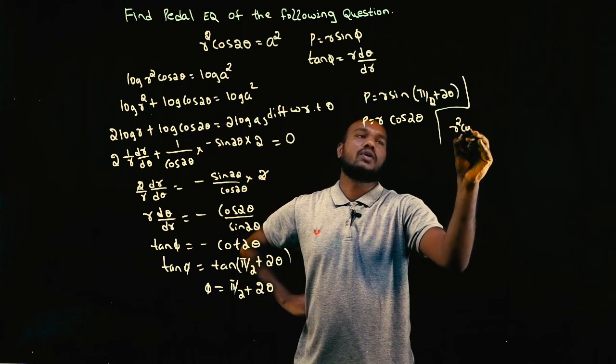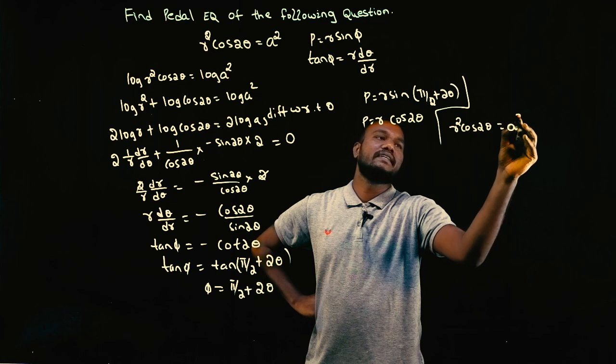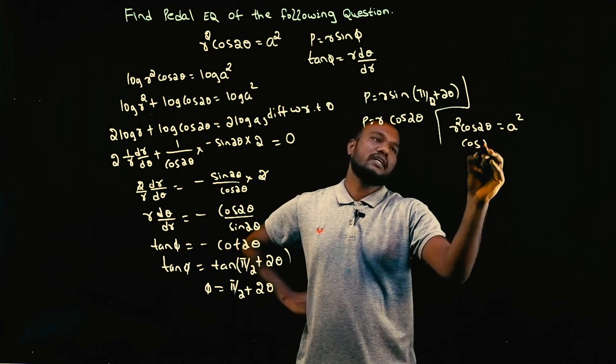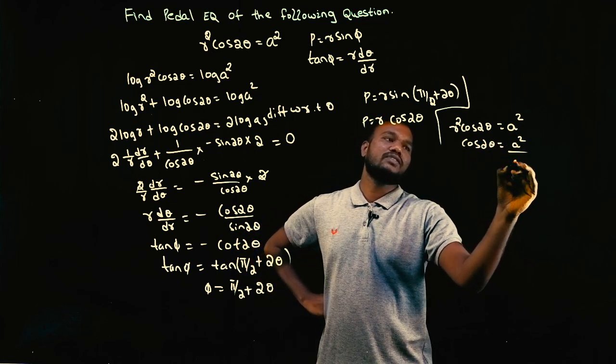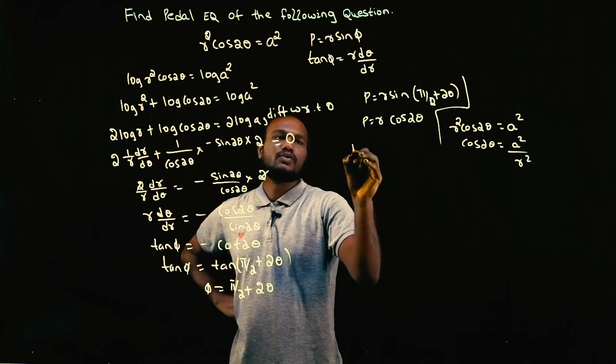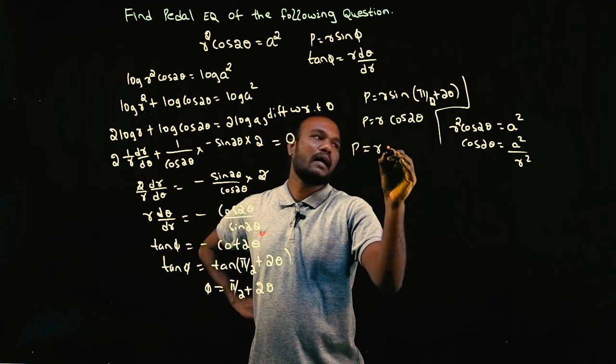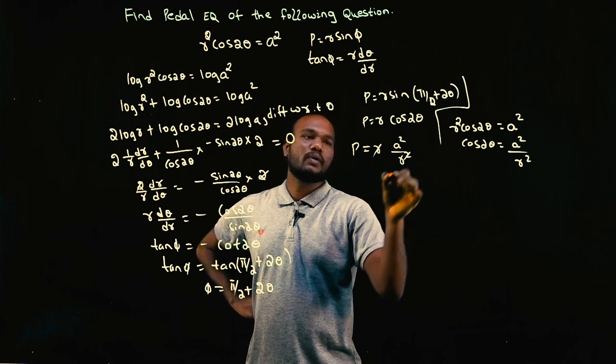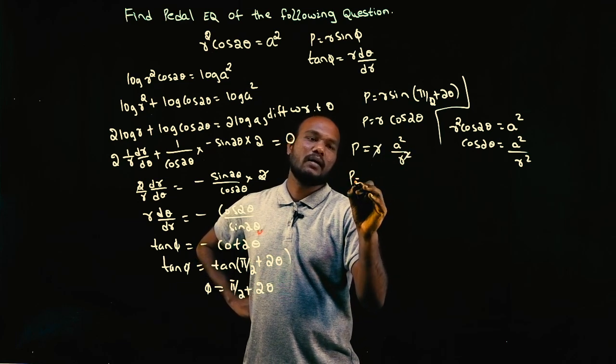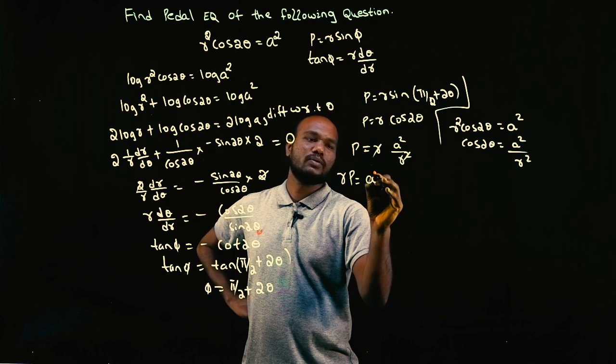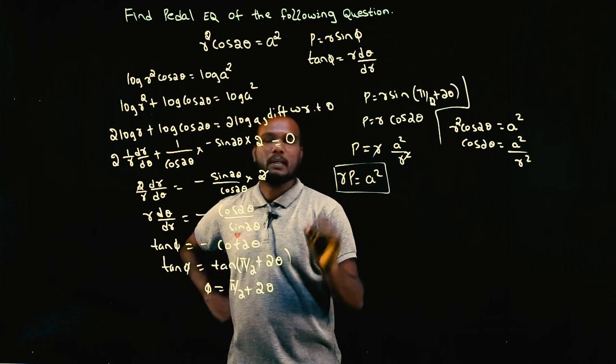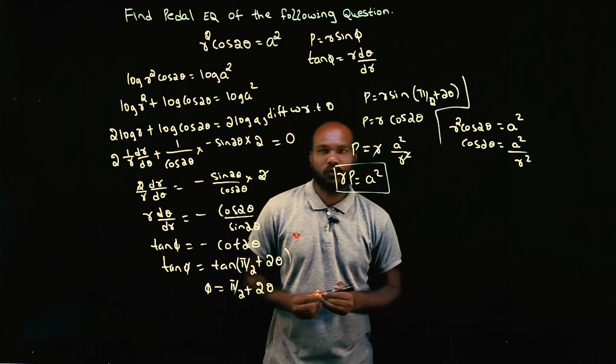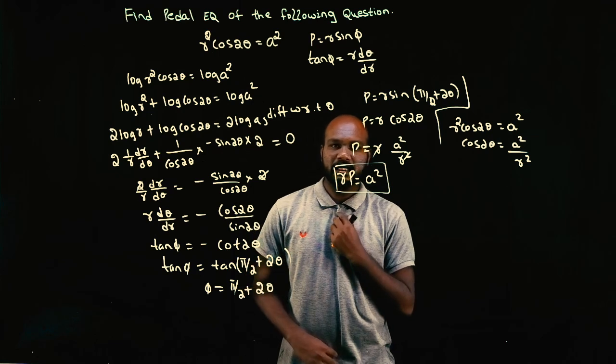So R squared cos 2 theta equals A squared. Cos 2 theta value can be directly found by A squared by R squared. So P equals R times A squared by R squared. One R, one R get cancelled. P times R equals A squared. This is the pedal equation that we wanted. Is that okay? Yes.